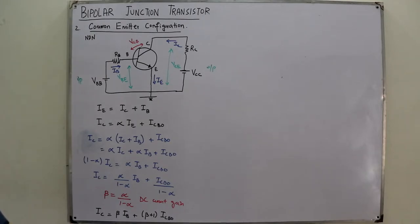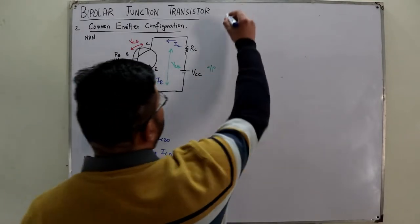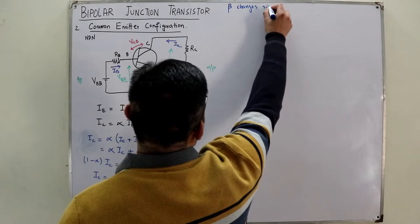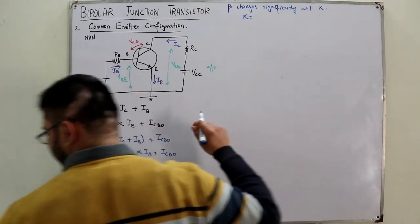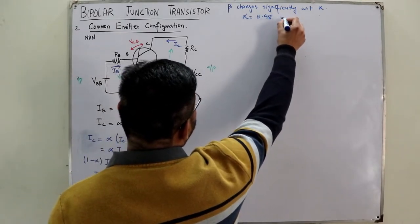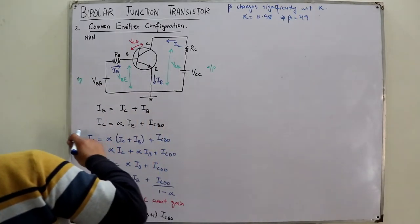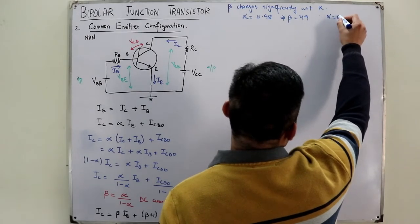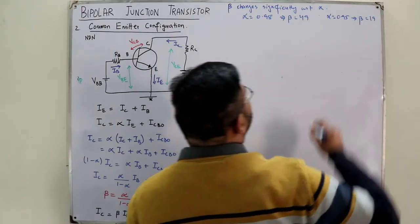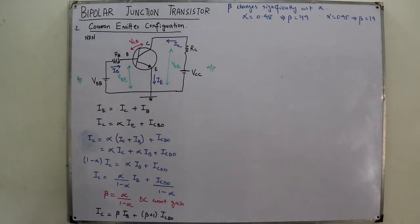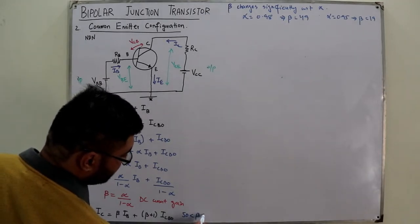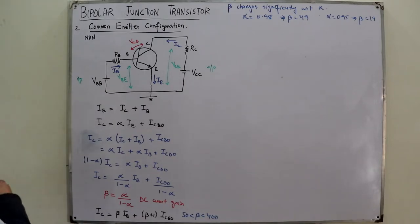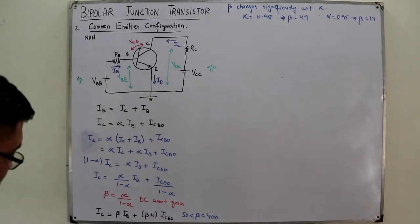Beta changes significantly with respect to alpha. For example, if α = 0.98, then β = 49. If α = 0.95, β = 19 — a quite significant change. The range of β given in the book is from 50 to 400. So IC = β·IB + (β+1)·ICBO, where (β+1)·ICBO is denoted ICEO.